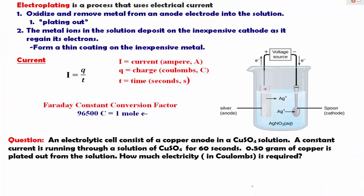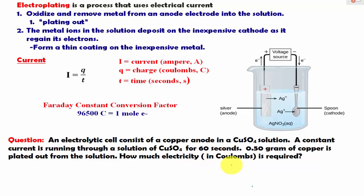Let's try another problem, but we are solving for a different variable. In this case, I have an electrolytic cell consisting of a copper anode in a copper sulfate solution. A constant current is running through the solution for 60 seconds, and in the process 0.5 grams of copper is plated out from the solution. We are asking how much electricity in coulombs is required — that is, we are solving for Q.